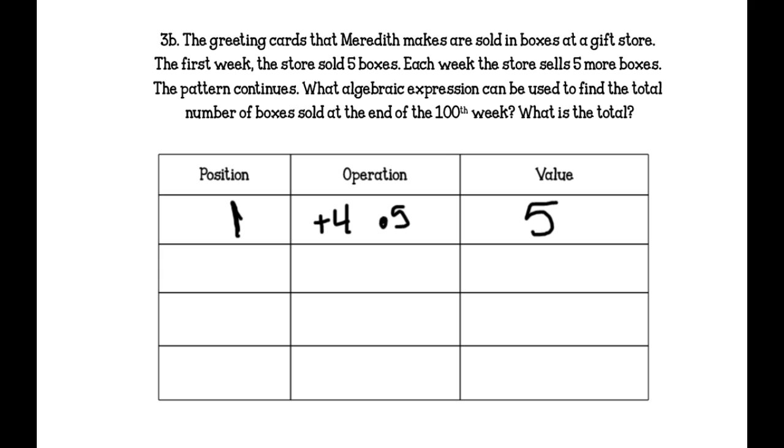Each week, the store sells 5 more boxes. So the second week, they would sell 10. Would that be plus 4, or would that be times 5? It would be times 5. So that's probably what our operation is going to be to get to the next value. Then it says the pattern continues by increasing by 5 each week. So then the third would have 15. And again, 3 times 5 is 15.